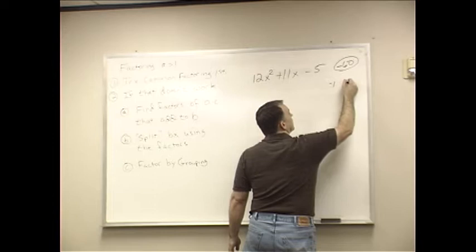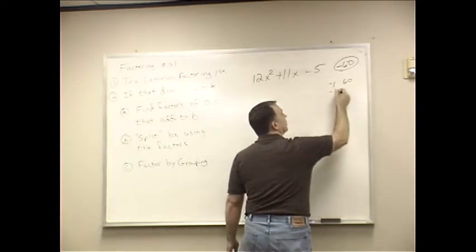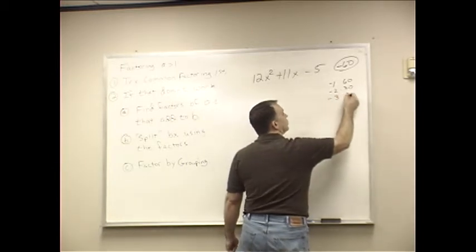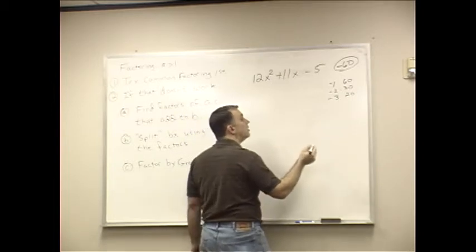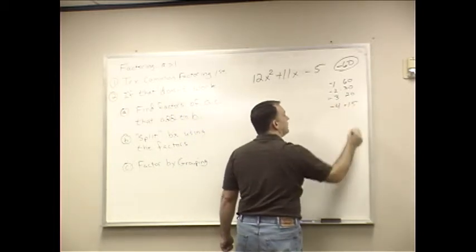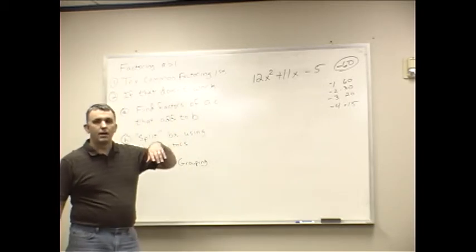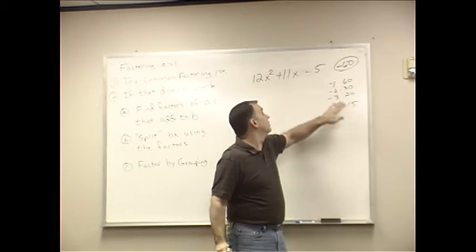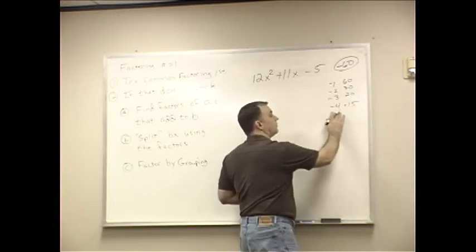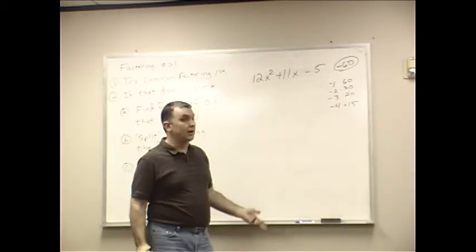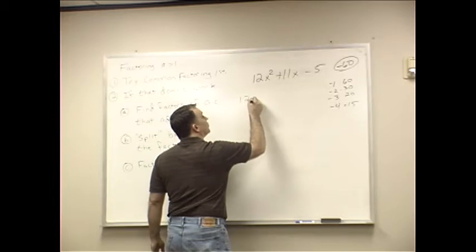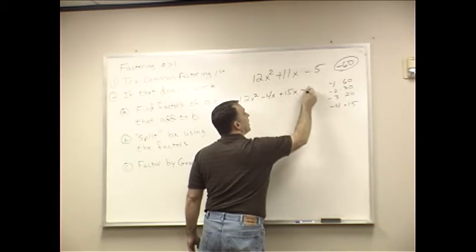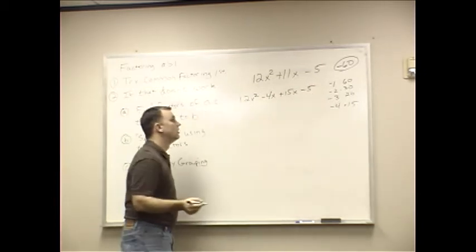Negative 1 times 60. No, 1 and 60 aren't going to work. Negative 2 and 30. 2 and 30 won't work. Negative 3 and 20, that won't work. Getting closer, though. Negative 4 and 15. Notice how I'm just working that up systematically. Negative 4 times 15, that is negative 60. And negative 4 plus 15, that's positive 11, isn't it? So, I'm going to break this up. 12X squared minus 4X plus 15X minus 5.